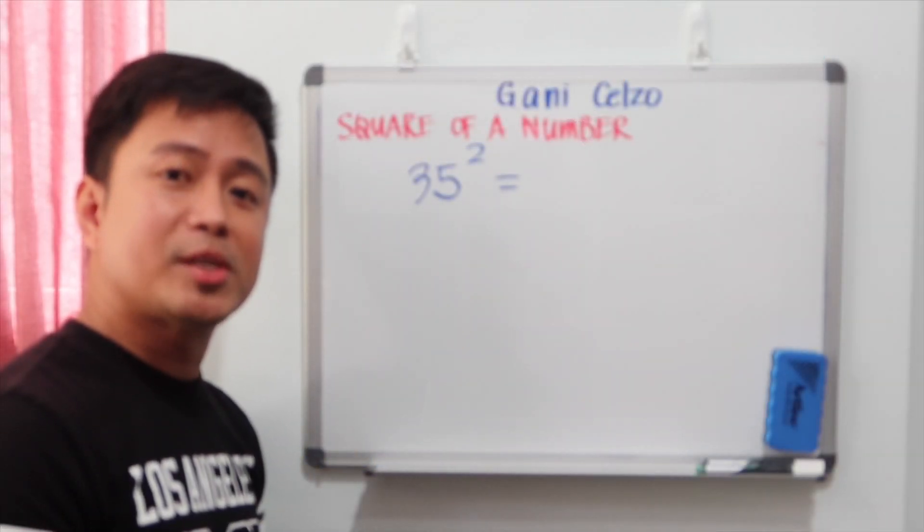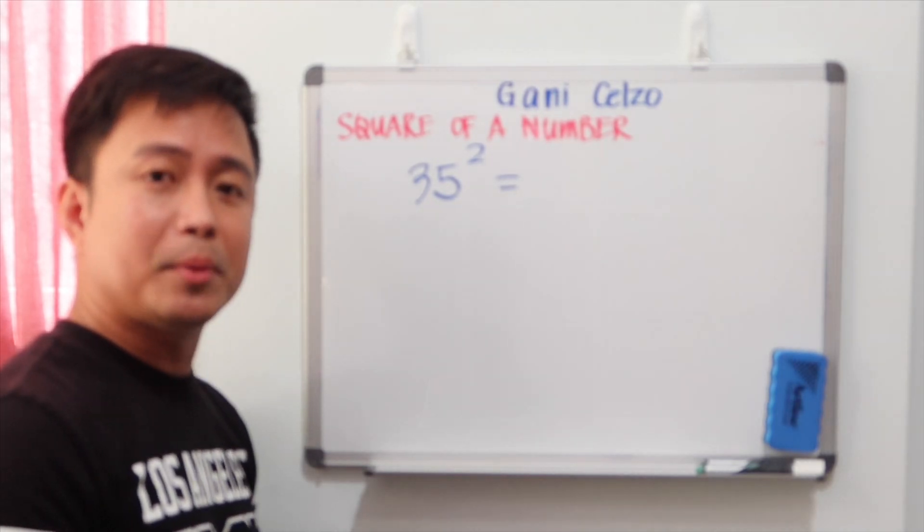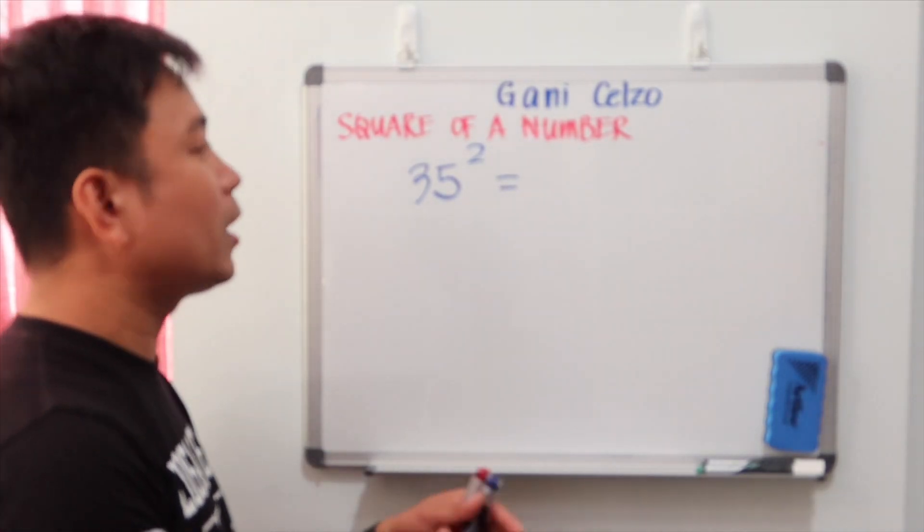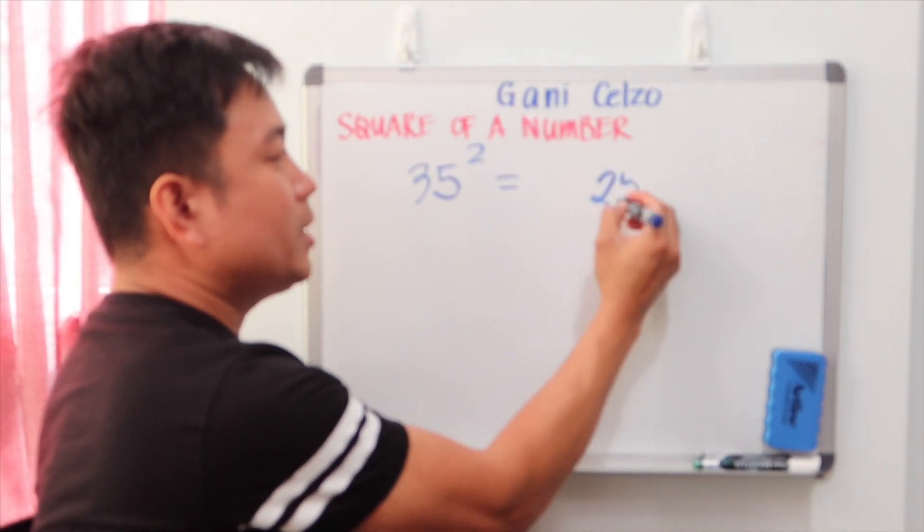Perhaps the most common mental math is squaring a number ending in 5. For example, if you do 35 square, numbers ending in 5, the last two digits will always be 25.